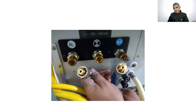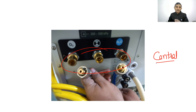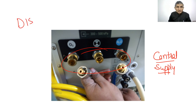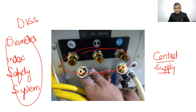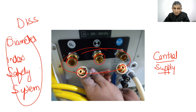The pin index safety system prevents wrong attachment of cylinders. For central supply pipelines, the diameter index safety system (DISS) is used — oxygen, nitrous oxide, etc. have different diameter connectors so the wrong gas cannot be attached to the wrong port. DISS prevents wrong attachment of central supply, while pin index prevents wrong attachment of cylinders only.